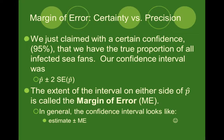We calculated that by taking our sample proportion, which is p-hat, and adding and subtracting two times our standard error. The extent of the interval on either side of our sample proportion is called the margin of error, which will be abbreviated as ME.